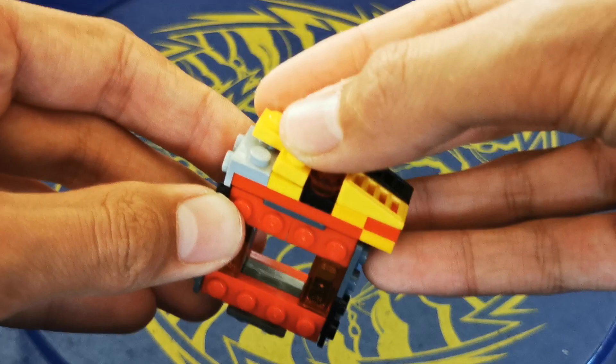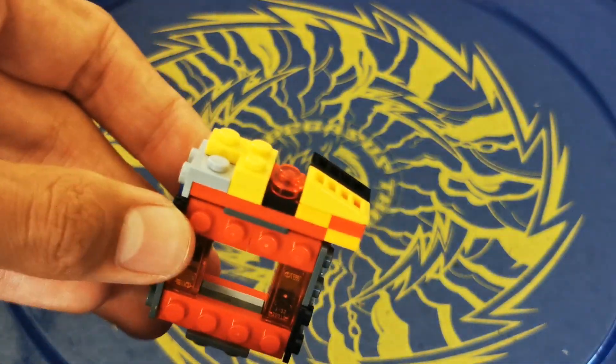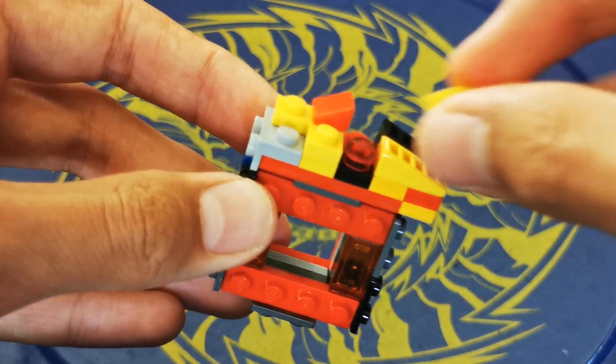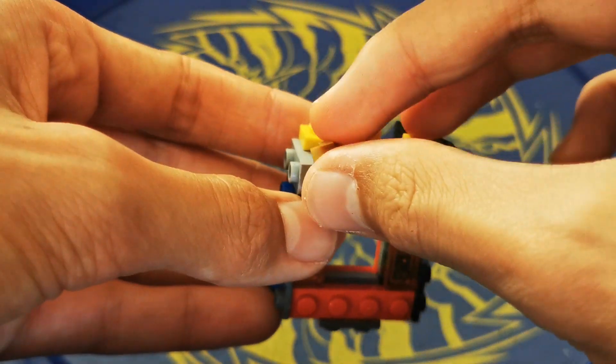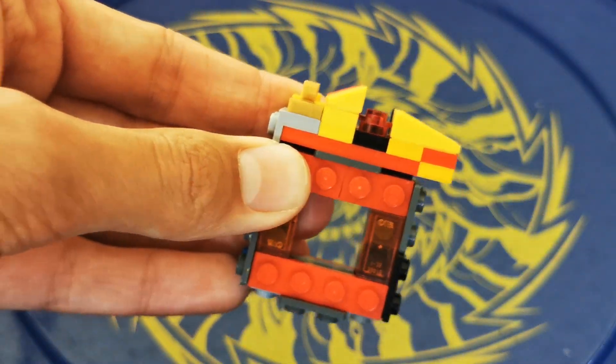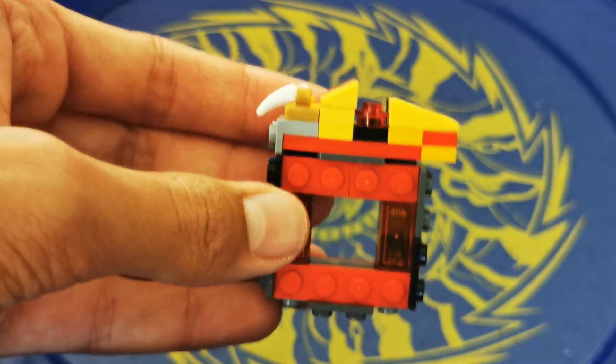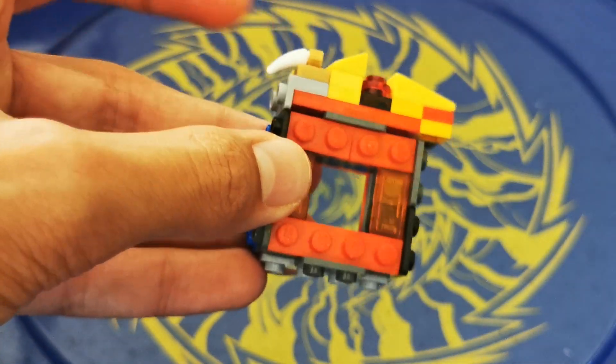Grab this right-angle piece and put it there. Then attach a red cheese slope there and a yellow cheese slope there. Then grab this clip piece and put it there. And grab this little claw piece and attach it there so it has a bit of rubber.